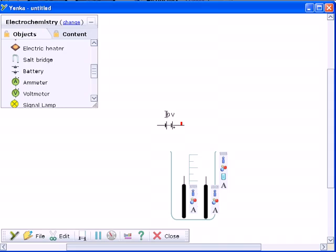You can add a battery, a switch and wires to the electrodes to create a circuit.